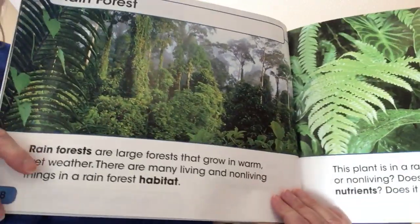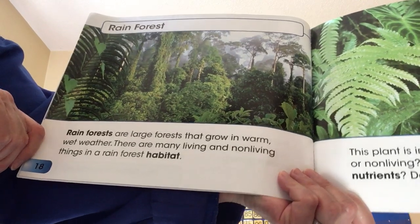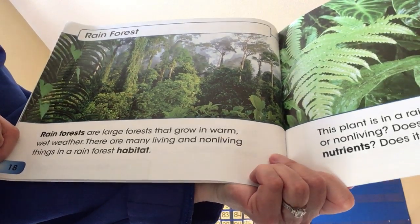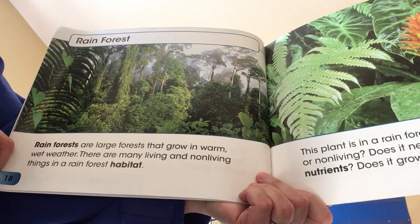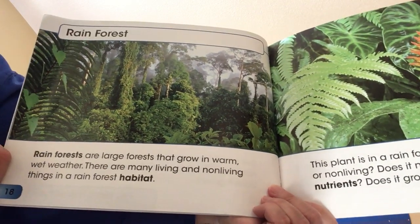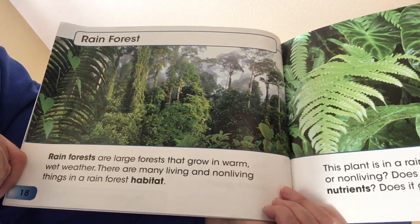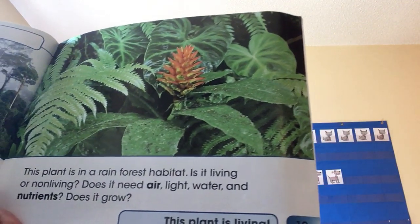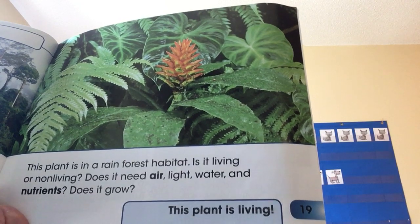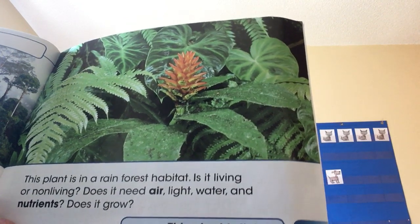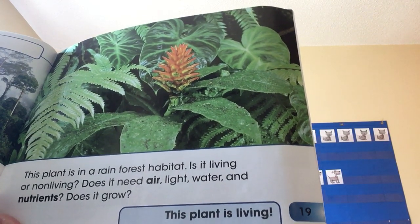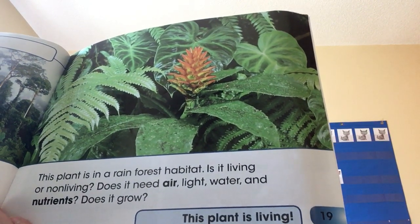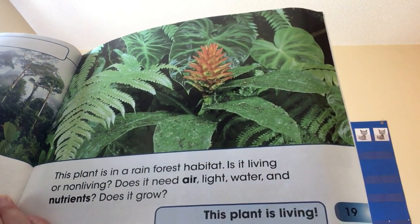The rainforest — I love the rainforest. Rainforests are large forests that grow in warm, wet weather. There are many living and non-living things in a rainforest habitat. Habitat — where something lives. This plant is in a rainforest — is it living or non-living? Living! It does need air, light, water, and nutrients. And plants do grow.